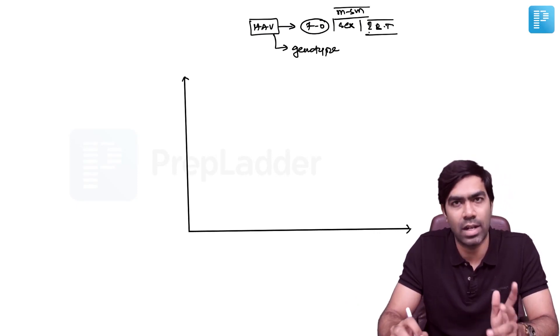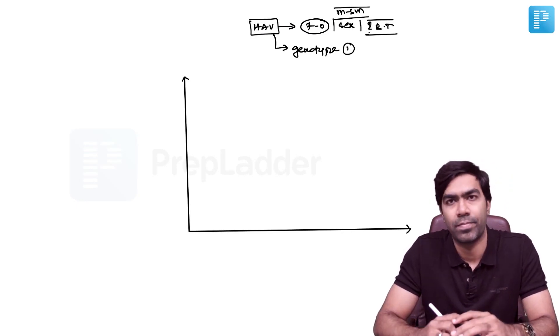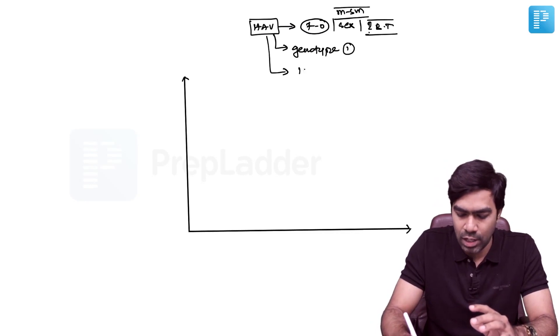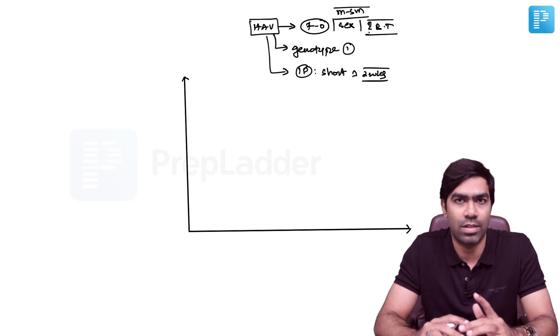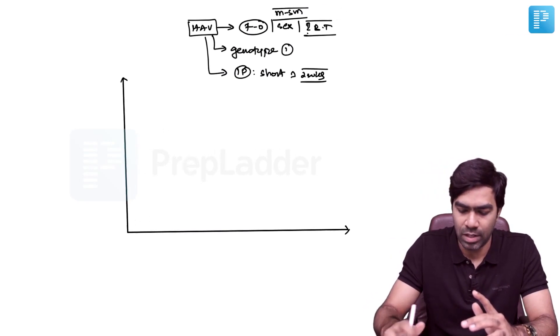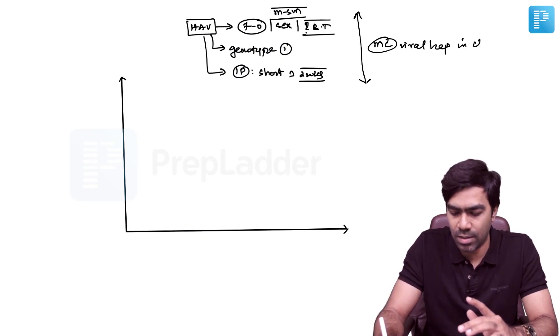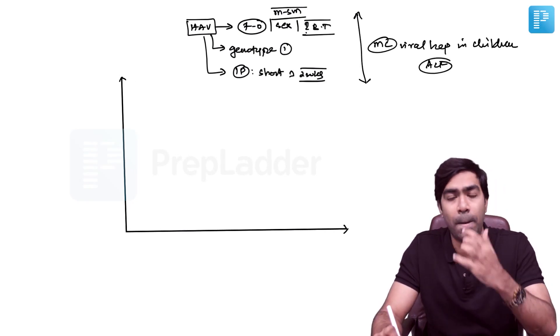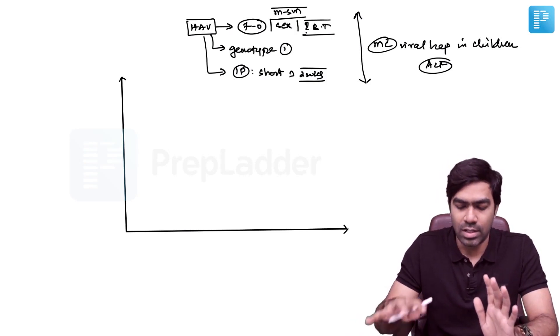The most common genotype in the Indian subcontinent is genotype 1. Incubation period is extremely short, approximately two weeks on average. Hepatitis A virus is the most common cause of viral hepatitis in children in India, and at the same time, it's the most common cause of acute liver failure in children in India.